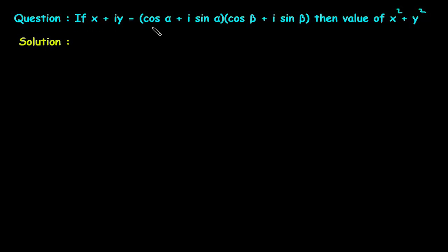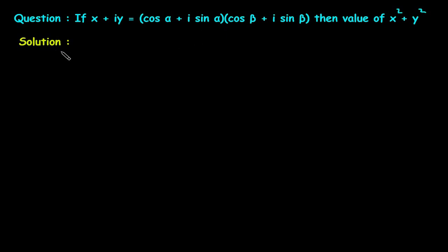If x plus iy is equal to cos alpha plus i sine alpha, multiplied by cos beta plus i sine beta, then we have to find the value of x squared plus y squared. We will write what is given and proceed with the solution.